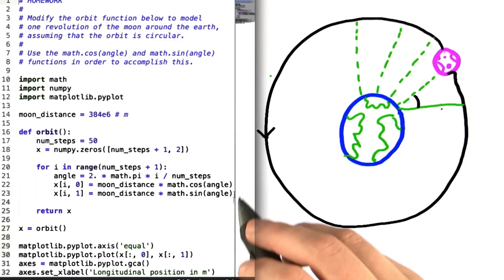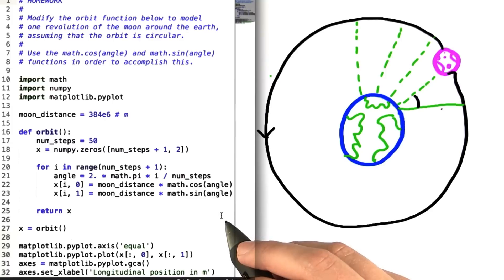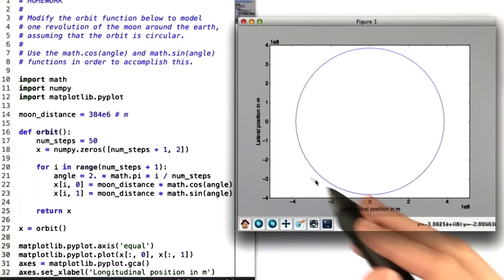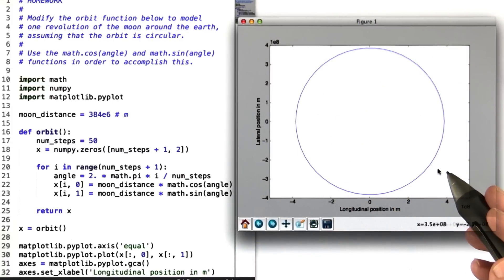Coming back to our code, after all this is filled in, if we run the program, we end up with a perfect circle, just like we were hoping to get for the trajectory of the moon around the earth in this ideal simulation.